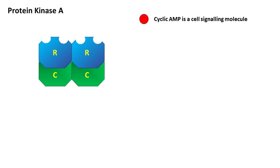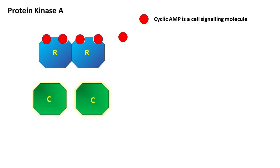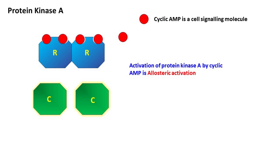Cyclic AMP usually acts as a cell signaling molecule. In the presence of any cell signal, the concentration of cyclic AMP in the cell will increase. When the cyclic AMP molecules bind with the regulatory subunit, the regulatory subunit gets disassociated from the catalytic subunit.